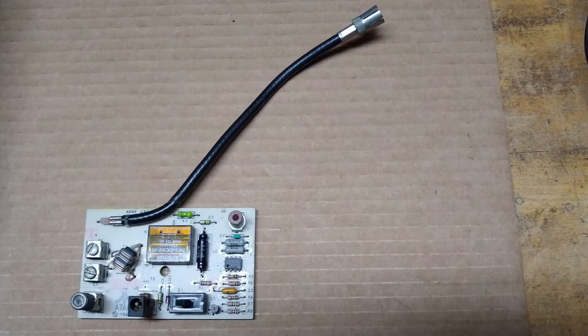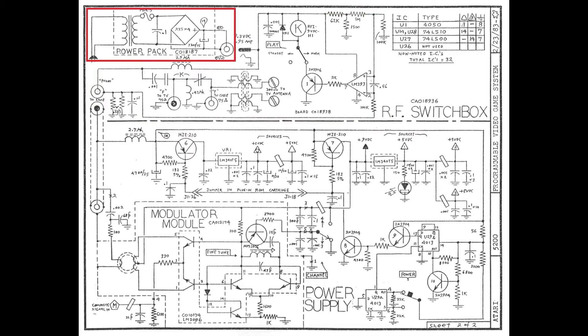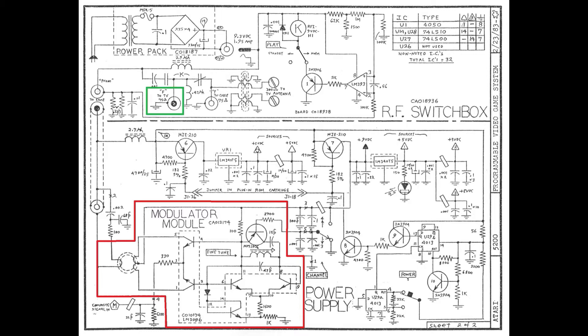In part one, I went through the majority of the theory of operation for the Atari 5200 RF switch. Before I discuss the issue that I had with the RF switch and how I fixed it, a little more explanation is still required regarding the theory of operation. Shown in the red outline is the schematic portion for the RF switch. The purpose of the RF switch is to pass power from the external power supply to the Atari 5200 console while simultaneously passing the RF modulated signal from the Atari 5200 console to the antenna input on a TV.